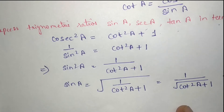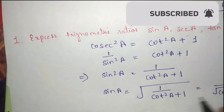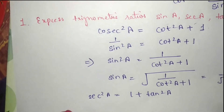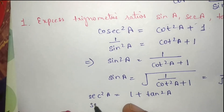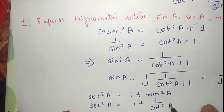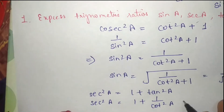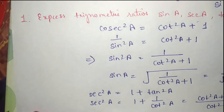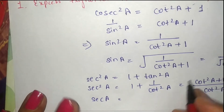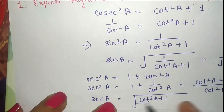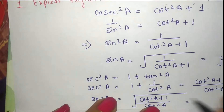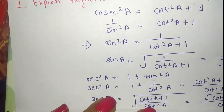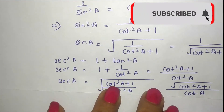Next, we find secant a. Using the identity sec²a = 1 + tan²a, and writing tan a in terms of cot a as 1/cot a, we get sec²a = (cot²a + 1) / cot²a. Taking the square root, secant a = √(cot²a + 1) / cot a. This is our second answer.